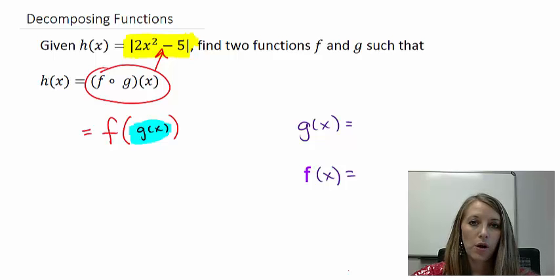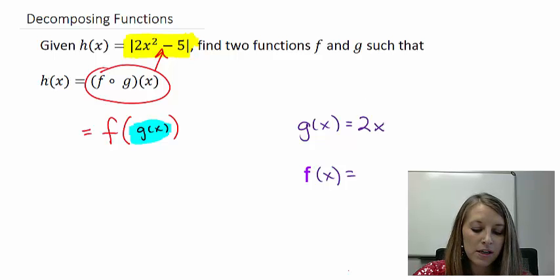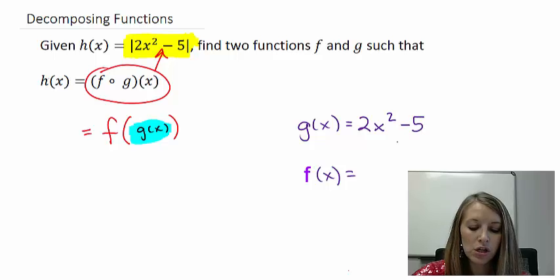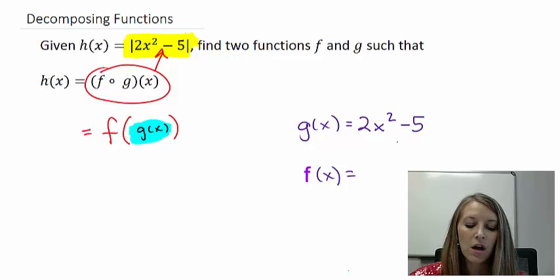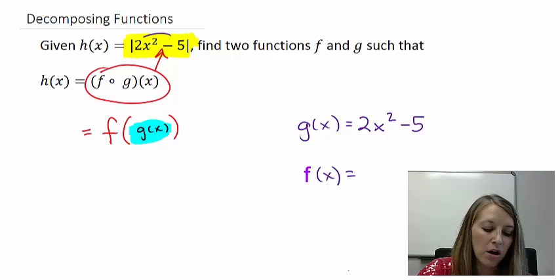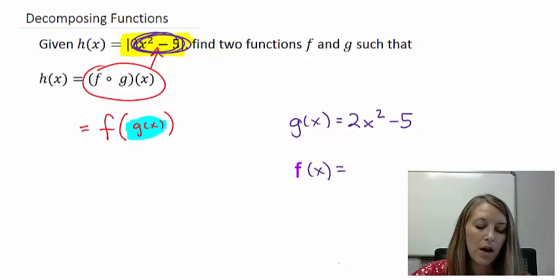Okay, so again, I like to think of it as an inside piece and an outside piece. So when I see inside, I think of inside the absolute values. So the most obvious inside piece or g of x as we defined it here would be 2x squared minus 5. That's what I have on my inside.